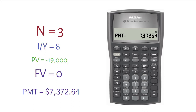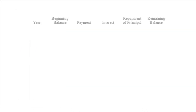Let's make an amortization schedule that will show how you are going to pay off the loan over time. To do so, we create five columns: Year, beginning balance, payment, interest, repayment of principal, and remaining loan balance.